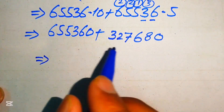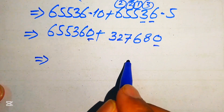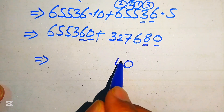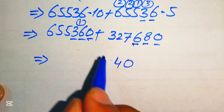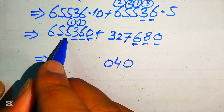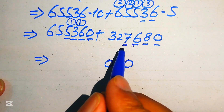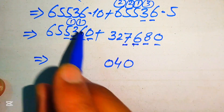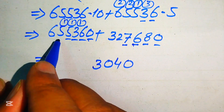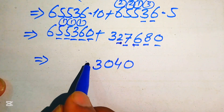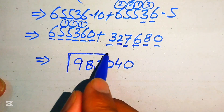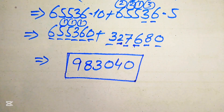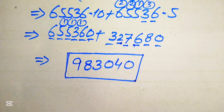In the final step, we sum 655360 and 327680: 0+0=0; 6+8=14, write 4 carry 1; 3+6+1=10, write 0 carry 1; 5+7+1=13, write 3 carry 1; 5+2+1=8; 6+3=9. So our final simplified form of the given expression is 983040. Thank you so much for watching — please subscribe to my channel for more exciting videos.